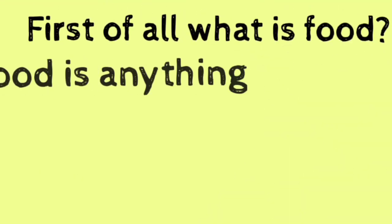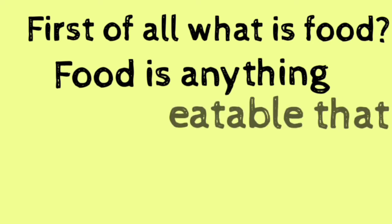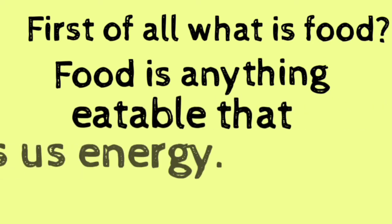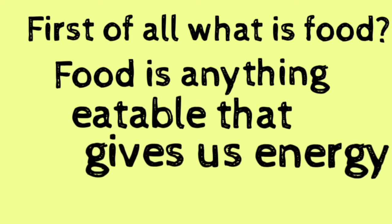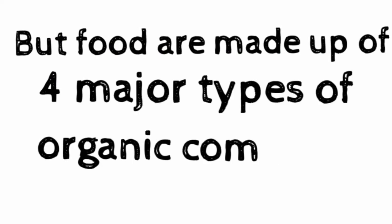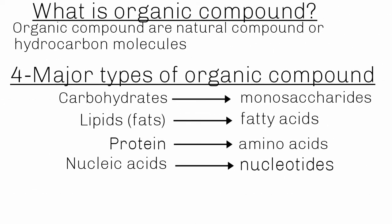First of all, what is food? Food is anything eatable that gives us energy. Food is made up of four major types of organic compounds. Organic compounds are carbon-containing or hydrocarbon compounds.